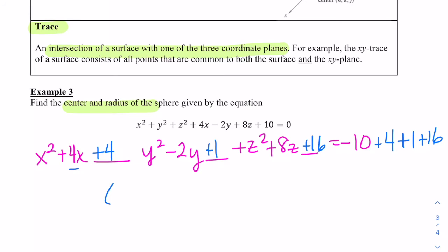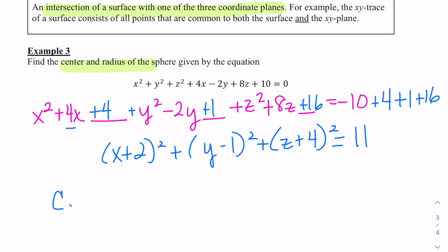When we factor this, we'll have (x plus 2) squared, plus (y minus 1) squared, plus (z plus 4) squared equals 11. We have the equation, and we can easily find the center. It'll be (-2, 1, -4), and the radius will be the square root of 11.